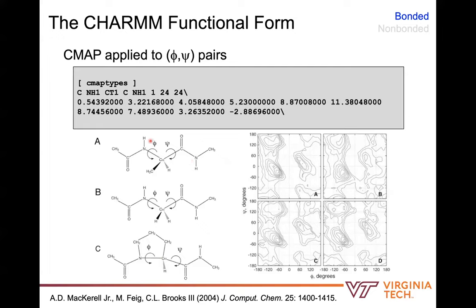It's quantum mechanical. For each dipeptide—alanine, glycine, and proline—QM energy scans of phi and psi space are performed and then repeated with molecular mechanics. The CMAP surface is simply the energy difference between the two at each point. It's purely from quantum mechanics; no experimental data is involved.